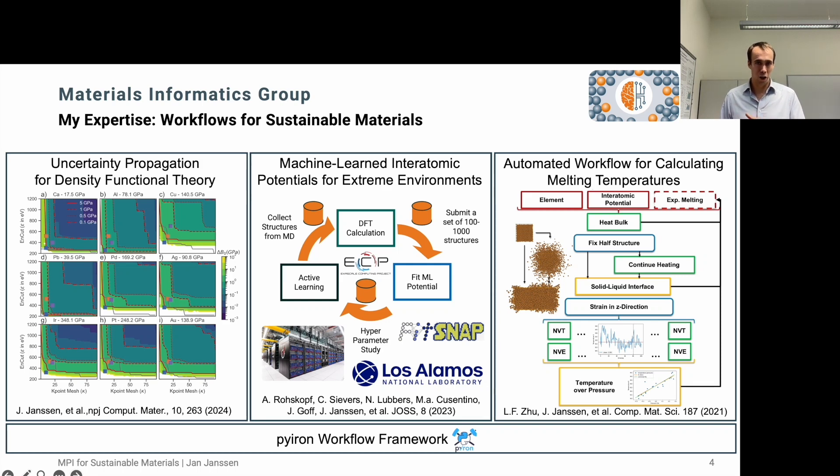We start at the density functional theory scale, looking at the electrons in terms of the density, and fit machine learned interatomic potentials to represent the interaction of just the nuclei of our atoms. And finally, calculate material properties, or in particular thermodynamic properties, like the melting temperature in this case, with these interatomic potentials. All these workflows are then implemented in the Pyiron workflow framework.